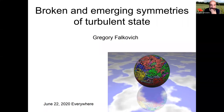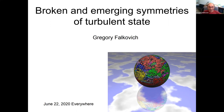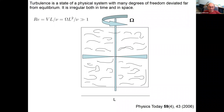It's a pleasure to have Professor Falkovich here, who is going to tell us about broken symmetry and emergence in the turbulent state. Let me start from a general remark: we will define turbulence in a very general, non-fluid-mechanical way — we take a system with many degrees of freedom deviated from equilibrium. This is a more or less general definition; it could be in a solid state when you excite quasi-particles or in any other state of a system.